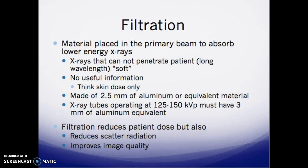Filtration refers to materials placed in the primary beam to absorb low-energy x-rays — long-wave or soft x-rays that cannot penetrate the patient and contribute only skin dose. Filtration is made up of 2.5 millimeters of aluminum or equivalent material. X-ray tubes operating at 125 to 150 kVp must have 3 millimeters of aluminum equivalent.